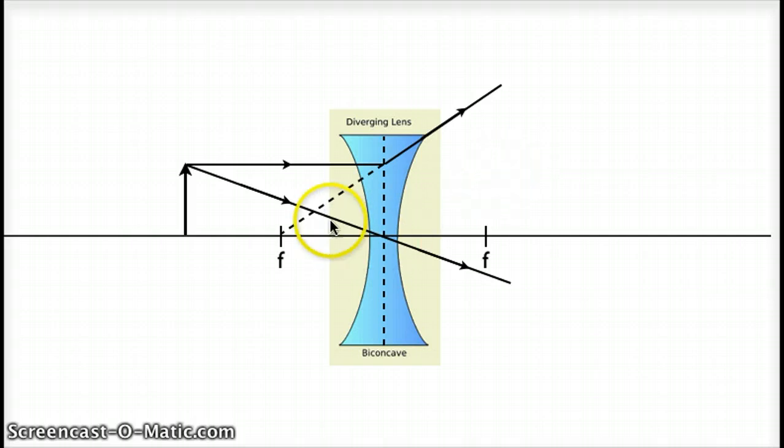However, we do get an intersection between principal ray number two and the imaginary traced back part of principal ray number one. We do have an intersection right here. And that is actually where our image is going to form. Right here we get a small image, much smaller than our object, that goes from the optical axis up to this somewhat imaginary intersection point between principal ray number two and the traced back part of principal ray number one. Notice this image is over here on the virtual side of our lens as opposed to being on the real side of our lens. This means that this is a virtual image rather than a real image.